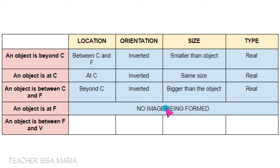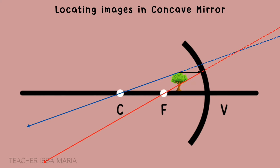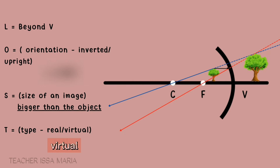The last case for concave mirror: the object is between F and V (the vertex). Following the same steps, we observe that no intersection forms in front. We extend the rays and find that the image is at the back of the mirror. The location is beyond the vertex. The orientation is upright. The size of the image is bigger than the object. The type of image is virtual since the image is upright. That's all about concave mirror.